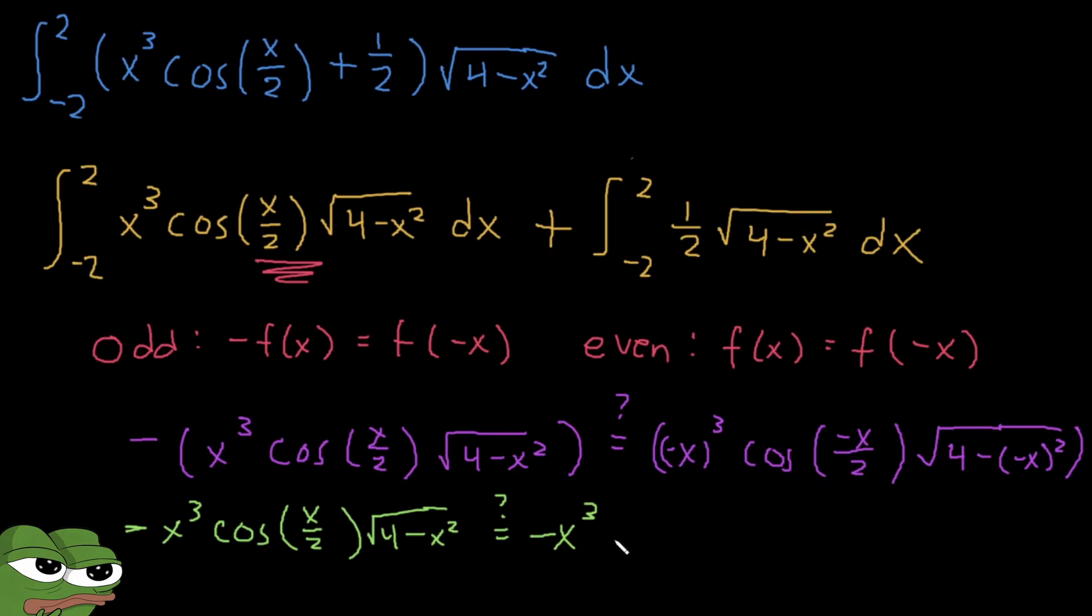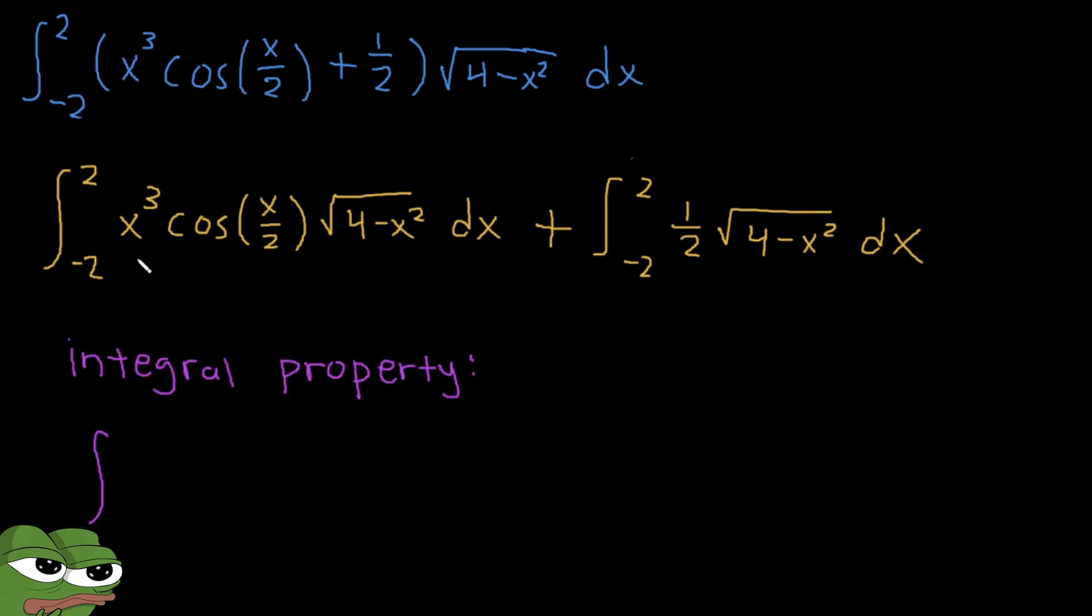This would just be cosine x over 2, it's just the same as cosine negative x over 2. And for this last part we know that the square of any negative number would just be positive, so this is just 4 minus x squared. So both sides of the equation are the same and so we can actually say that they are an odd function.